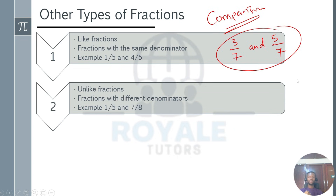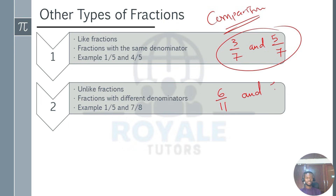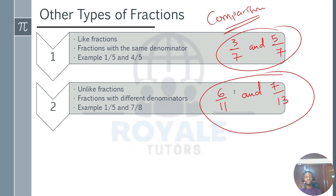Unlike fractions are fractions that have different denominators. An example is 1 over 5 and 7 over 8. If you have 6 over 11 and 7 over 13, these are unlike fractions because they have different denominators.